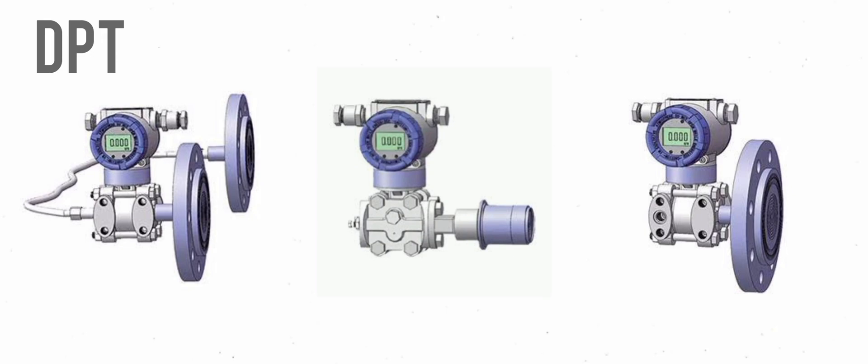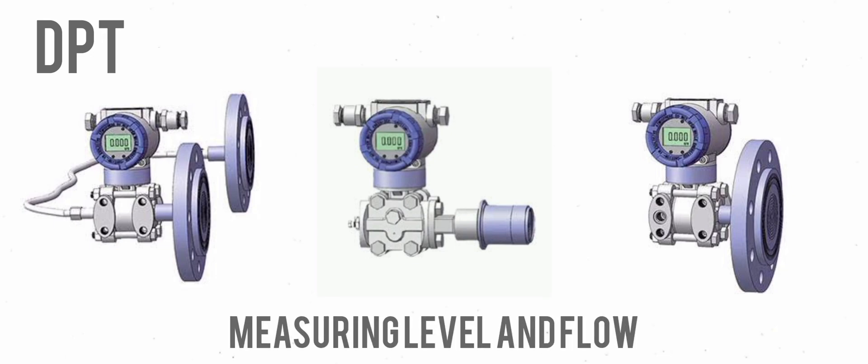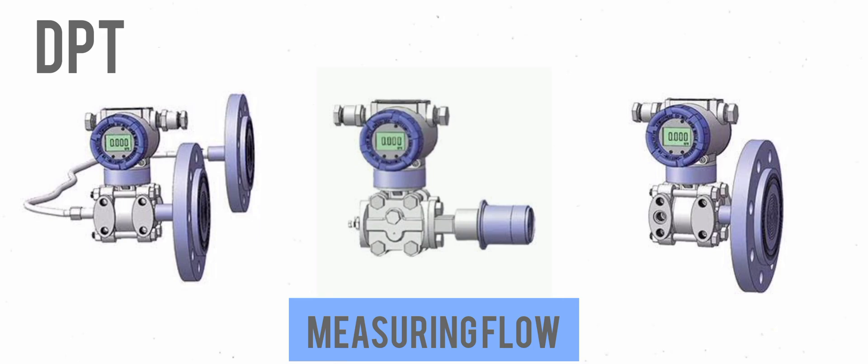So, now that we know what pressure is and how a DP transmitter works, what is it used for? Well, the most common applications are for measuring level and flow. Here we'll discuss how a DP transmitter measures the flow of water in a sealed element.